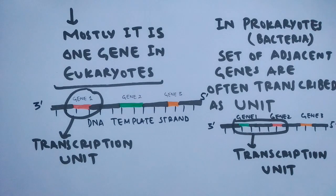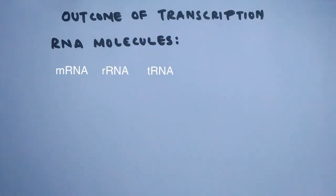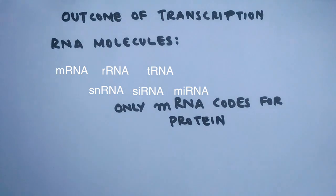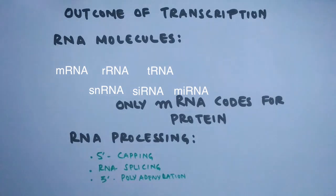The outcome of transcription are the RNA molecules. We get mRNA, rRNA, tRNA - these are the three major RNA molecules we get from transcription. Rest includes snRNA, siRNA, miRNA, and others. The only RNA that codes for protein is the mRNA. In eukaryotes, the mRNA molecule produced undergoes mRNA processing like 5 prime capping, RNA splicing, and 3 prime polyadenylation.